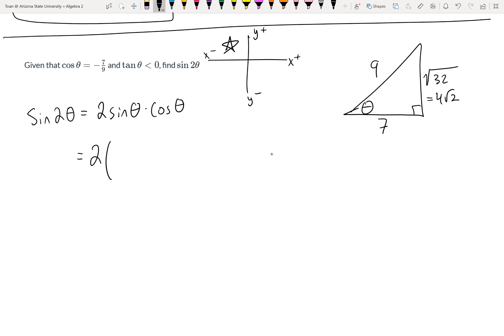which according to this picture is opposite over hypotenuse, 4√2 over 9, times the cosine which is adjacent over hypotenuse, and because we're in the second quadrant it's going to be negative 7/9.